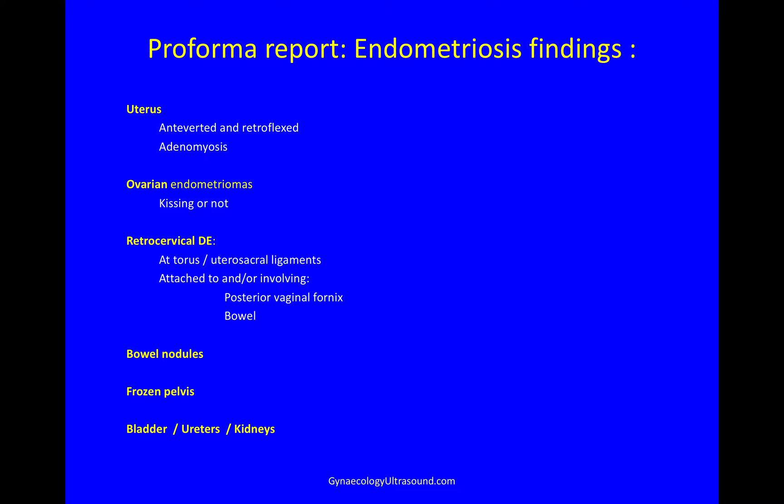As I'm going through the scan, I'm mentally building a report in my head looking for features of endometriosis: whether the uterus is anteverted and retroflexed, if there's adenomyosis, looking for ovarian endometriomas and whether the ovaries are kissing, looking for retrocervical deep endometriosis in the torus or uterosacral ligaments, whether this involves the posterior vagina and bowel, looking for other bowel nodules, a frozen pelvis, and when there's some urine in the bladder, looking at the bladder, lower ureters, and the kidneys.